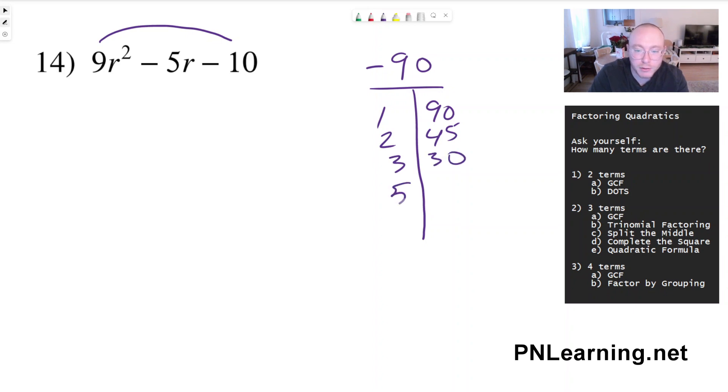4 and nothing, 5 and 18, 6 and let's see, we have 2 and 3 as factors, so if we double the 3, we'll cut the 30 in half, that's 6 and 15.